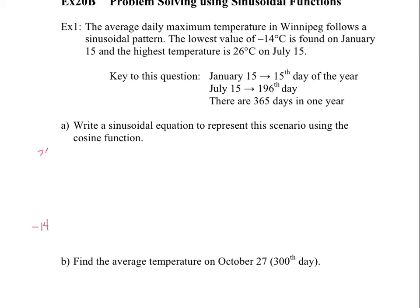Okay, so the minimum would be negative 14, right, if you were to sketch a graph. And then your maximum would be 26. Okay, so you know that the difference, the total difference between those two, okay, so the difference between 26 and negative 14, there would be 40 degrees Celsius.